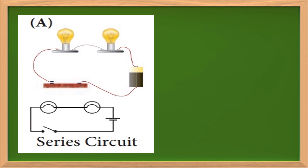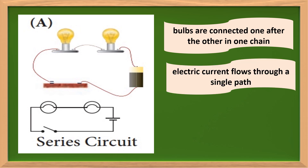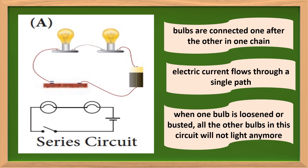Look at the illustration carefully. Bulbs that are connected one after the other in one chain is an example of a series circuit. In a series circuit, electric current flows through a single path. So, when one bulb is loosened or busted, all the other bulbs in this circuit will not light anymore. The loosened or busted bulb breaks or opens the pathway, so electricity cannot flow through.